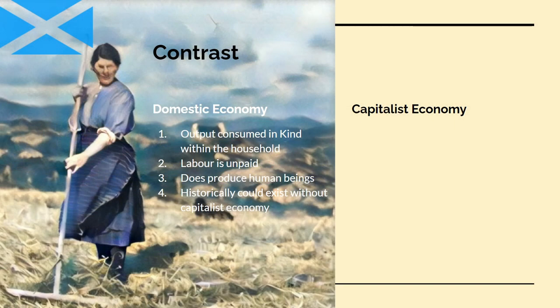Let's look at how the domestic economy is different from capitalism. The first point is that the output of the domestic economy is consumed in kind within the household — that is the point that Lenin made. The second point is that labour performed within the domestic economy is unpaid. The third point, and this is the most important, is that the domestic economy does produce human beings — it doesn't just produce material goods, it produces people. And historically, we know the domestic economy could exist and did exist without a capitalist economy.